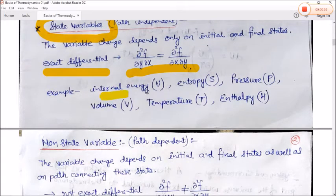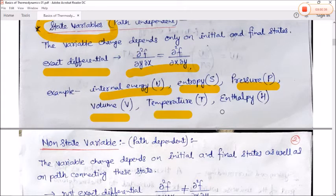Examples of state variables include: internal energy, entropy, pressure, volume, temperature, and enthalpy.